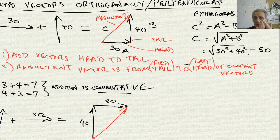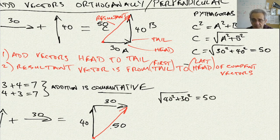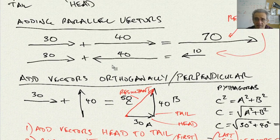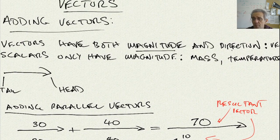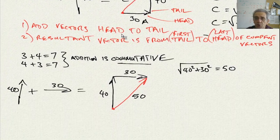So my resultant here is 50. That means this resultant is also 50, because it doesn't matter which order you do the calculation — 40 squared plus 30 squared is still the same answer. This gives me the magnitude. However, vectors have both magnitude and direction, so we've only gotten the magnitude portion so far.